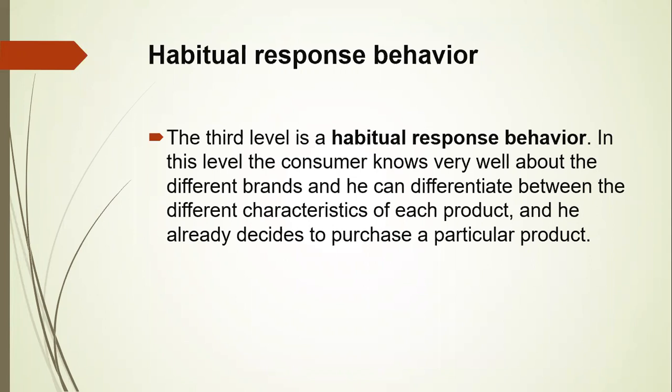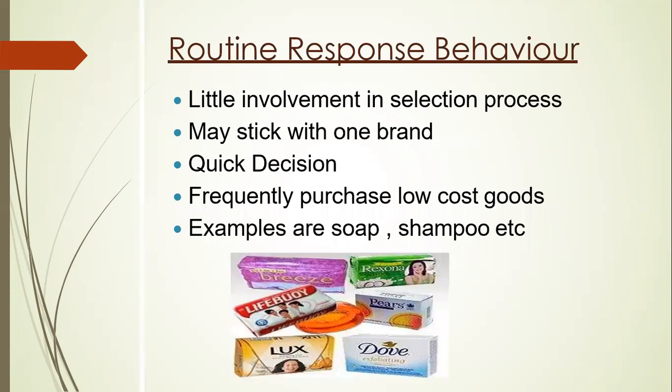Now moving to the third level: habitual response behavior. At this level the consumer knows very well about the different brands and can differentiate between the different characteristics of each product. He already decides to purchase a particular product because he has complete information and knowledge about the product, the number of brands available, and can easily differentiate between products. There is little involvement in the selection process and he may stick with one brand because of his experience and frequent usage — for example, Dove soap, if you feel it is very good for your skin you will not leave it.